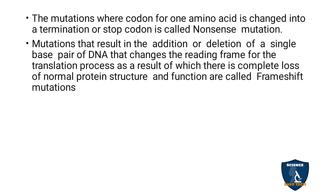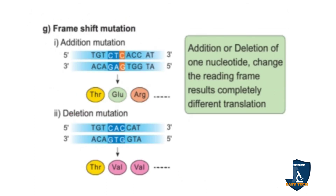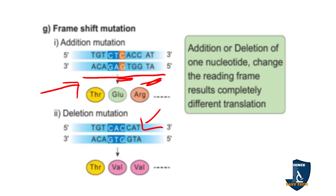Frameshift mutation results from the addition or deletion of a single base pair of DNA, which changes the reading frame for translation. This leads to a complete loss of normal protein structure and function. You can see the reading frame — ACAGTGACTGG — where addition of a nucleotide or deletion of a segment shifts the reading frame, leading to addition or deletion frameshift mutation.